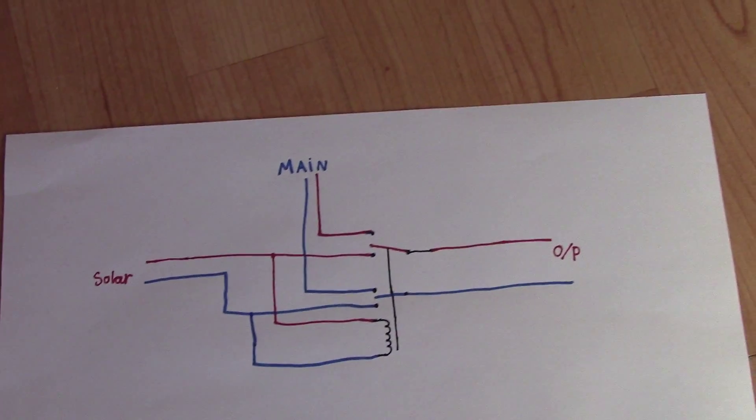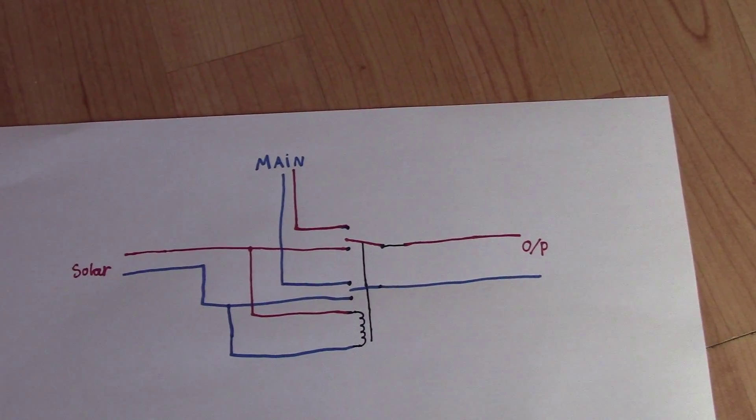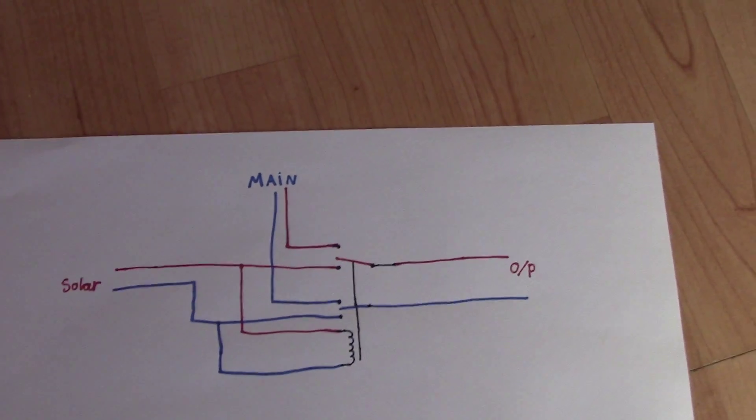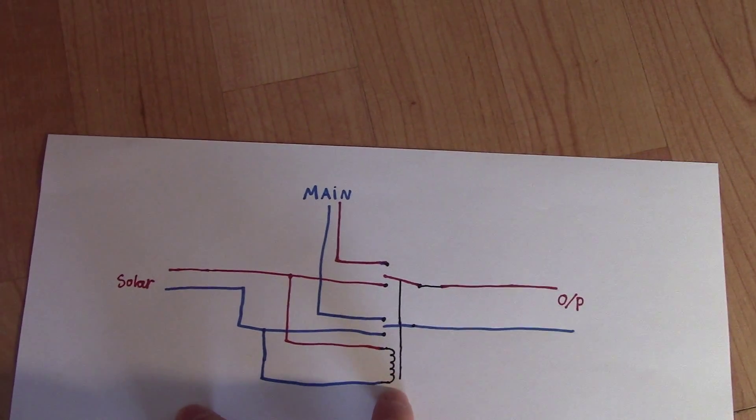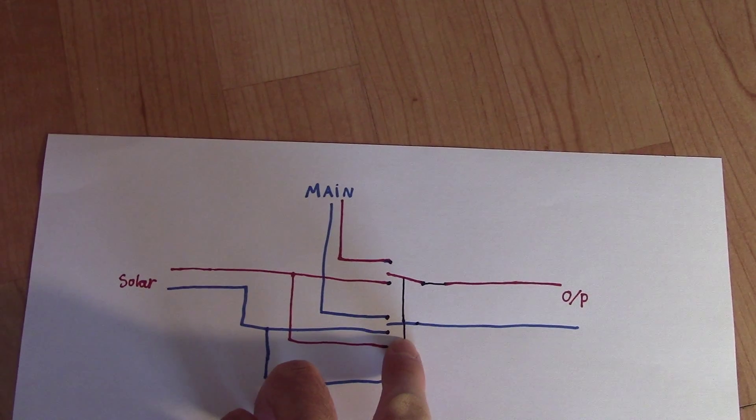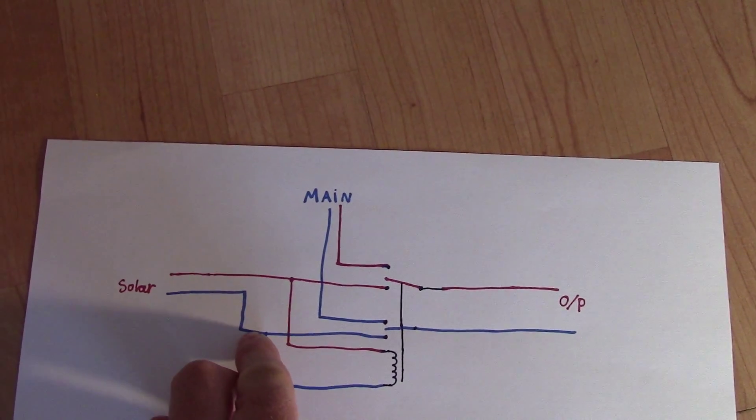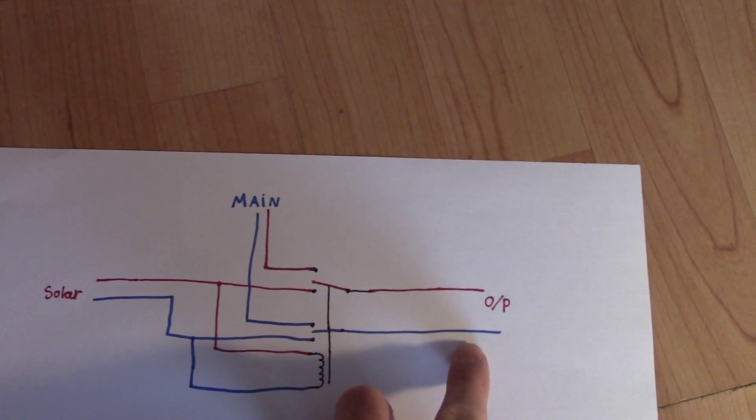Now what this is designed to do is it will prioritize solar power, so when this is activated this coil is energized, these contacts are closed and power will be going straight from the solar power to your load.